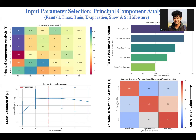Here I present the process showing how I selected the input parameters. Initially, six input parameters were chosen from the literature: rainfall, maximum temperature, minimum temperature, evaporation, snow, and soil moisture. I applied principal component analysis and cross-validated R-squared values and found that three is the optimum number of input parameters. The highest mean cross-validated R-squared belongs to the group with three predictors: rainfall, maximum temperature, and minimum temperature. That is why I chose these three predictors as model inputs.